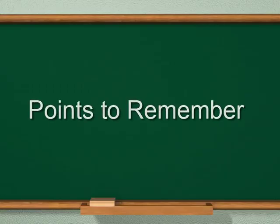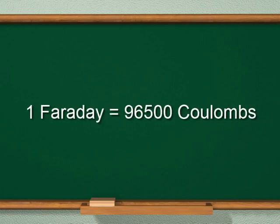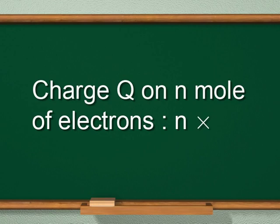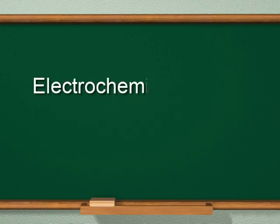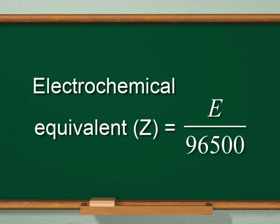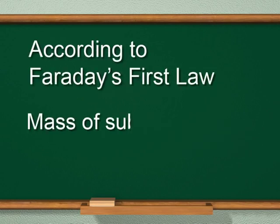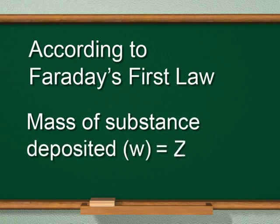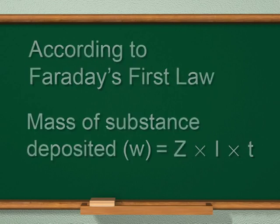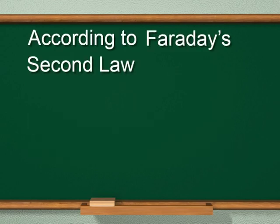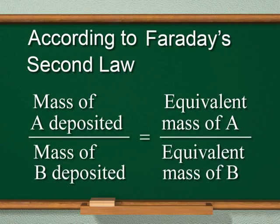Points to remember: One Faraday (1 F) equals 96,500 coulombs. The charge Q on n moles of electrons equals n × F. Electrochemical equivalent Z equals E divided by 96,500. According to Faraday's first law, mass of substance deposited W = I × t × Z. According to Faraday's second law, mass of A deposited divided by mass of B deposited equals equivalent mass of A divided by equivalent mass of B.